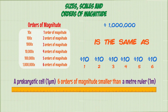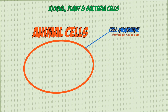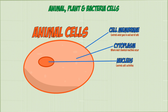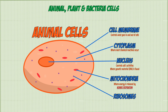Now let's dive into the structures of animal, plant and bacteria cells. Animal cells have a cell membrane which holds everything together and controls what goes in and out. They're filled with a jelly-like substance known as cytoplasm, where most chemical reactions occur. Floating in the cytoplasm are subcellular structures, including the nucleus which controls the cell's activities and contains its genetic material. They also have mitochondria — the powerhouse of the cell — where energy is released through aerobic respiration. Finally, animal cells have ribosomes, where proteins are made in a process known as protein synthesis.